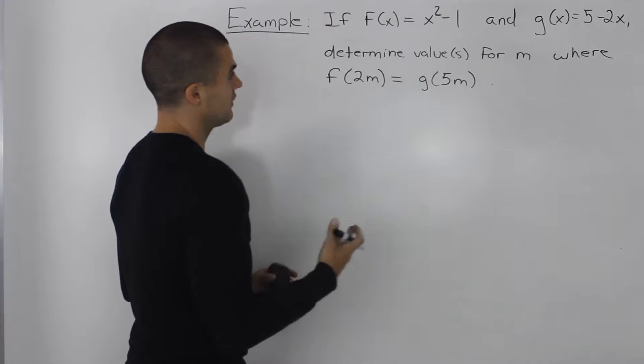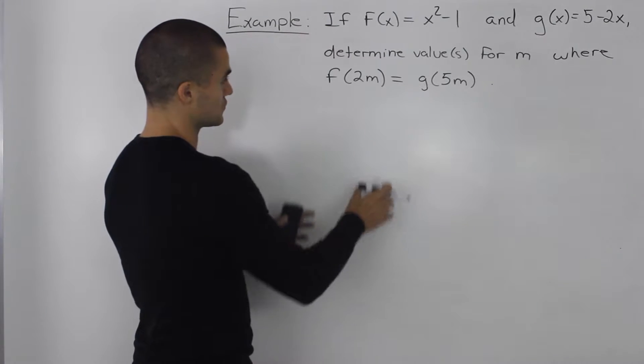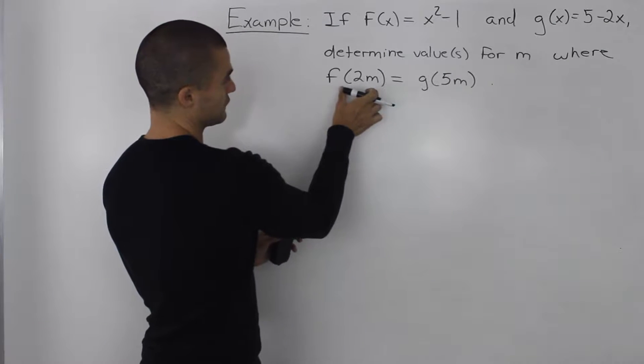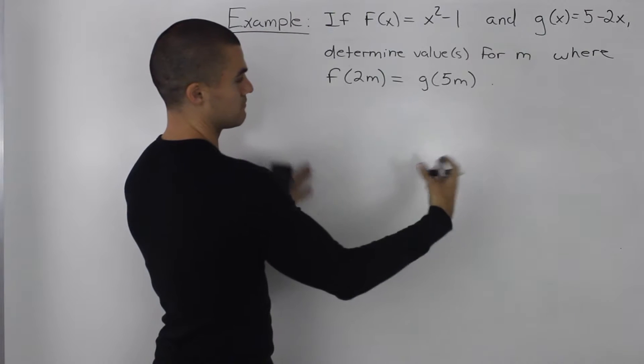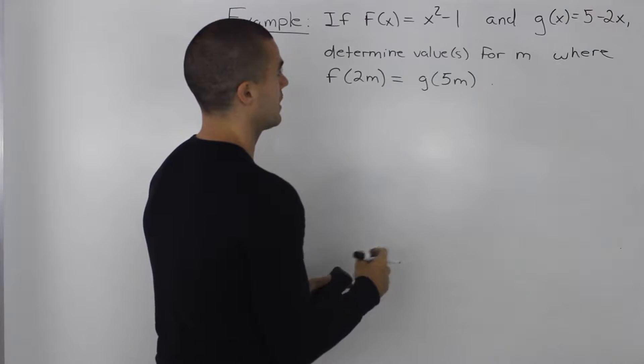Now this question is fairly simple. All we have to do is find expressions for f of 2m and g of 5m, make them equal to each other, and then just solve for m.